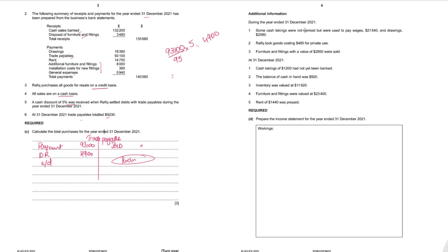During the year, some cash takings were not banked but used to pay wages of $21,540; drawings of $2,580 were taken in cash; goods costing $480 were taken for personal use (stock drawings). Furniture and fittings with a book value of $2,950 were sold for $3,480 (from the receipts), giving a profit on disposal of $530. At 31st December, cash takings of $1,200 had not yet been banked, and cash in hand was $920. Closing inventory is $11,920 and closing furniture and fittings $23,400.